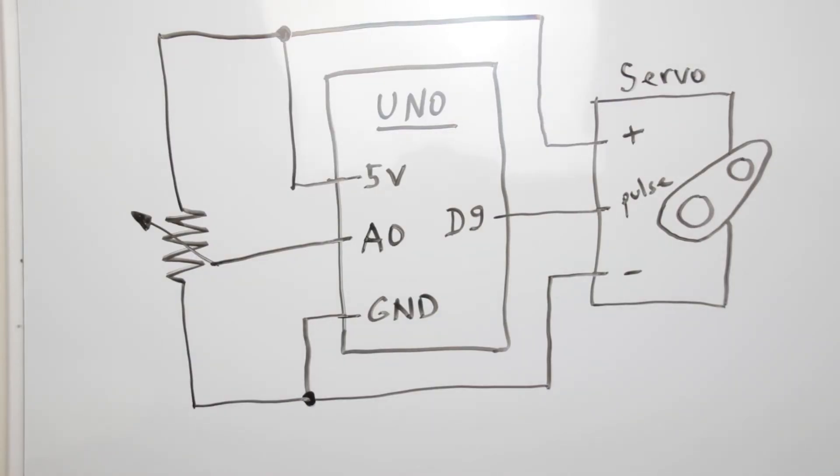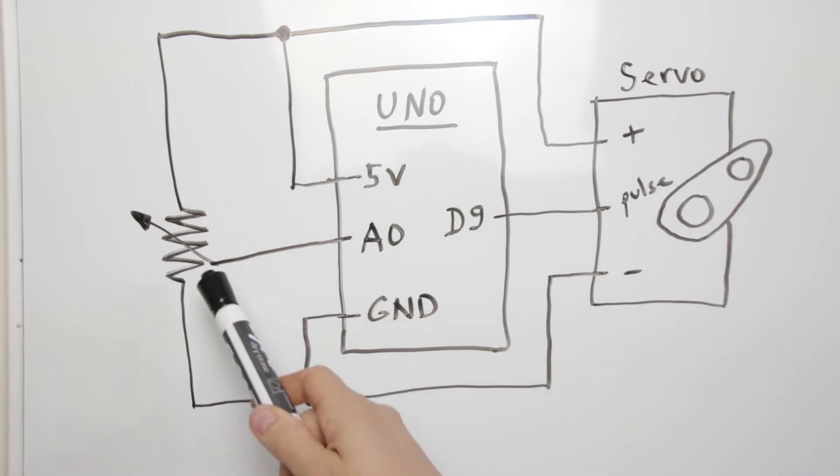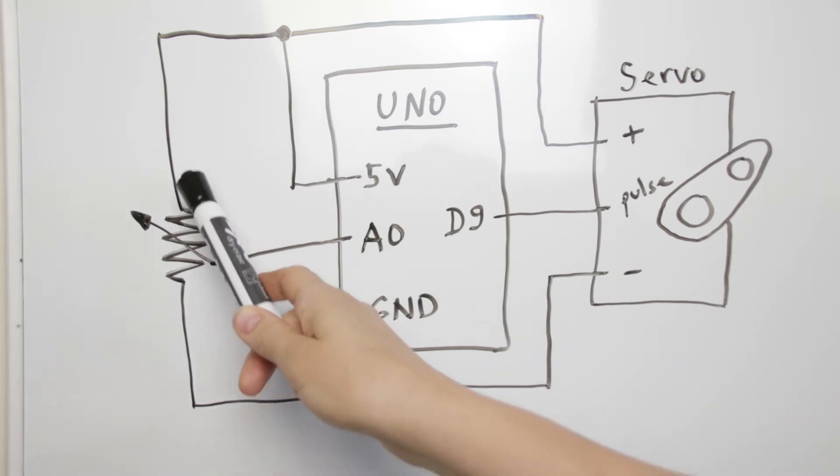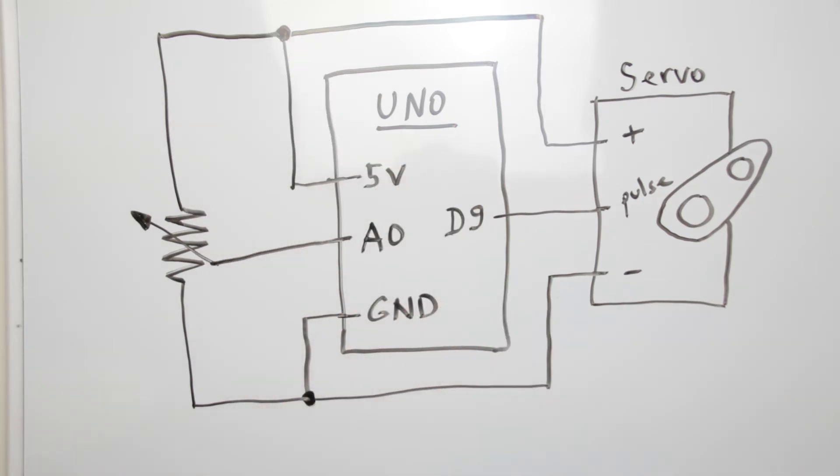This is the schematic for the second example for the servo controlled by potentiometer. This is the symbol for the potentiometer. It will be connected to pin A0 on the UNO. The other side will connect to the ground and the other side to 5 volts. Other than that the schema stays the same.